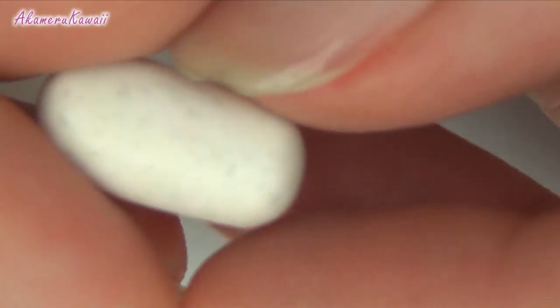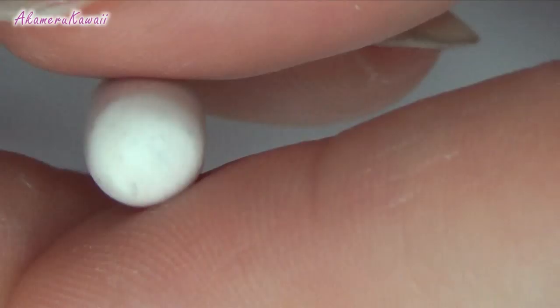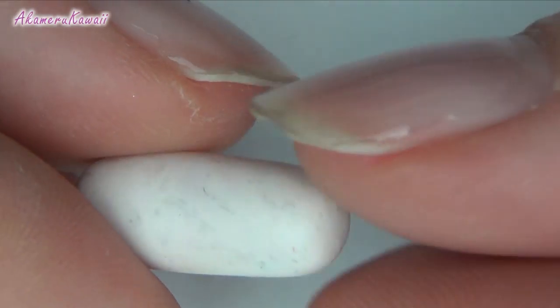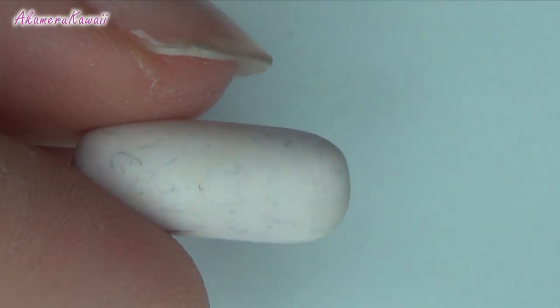Start out by rolling a piece of scrap clay into a fat sausage shape and round off one end. We are making the inside of the bowl like a negative, so to speak, so make the end a little smaller than you want your bowl.